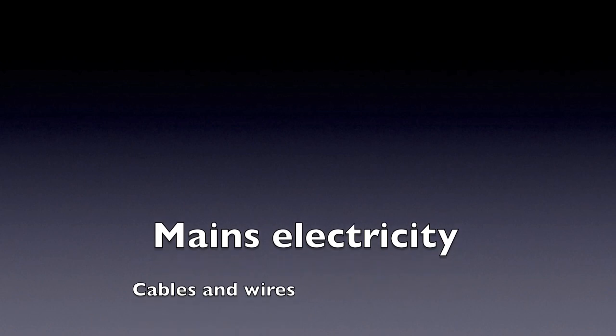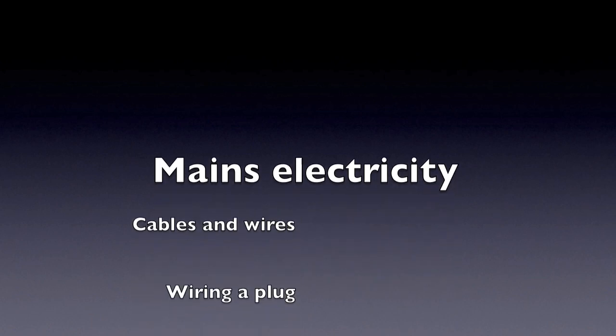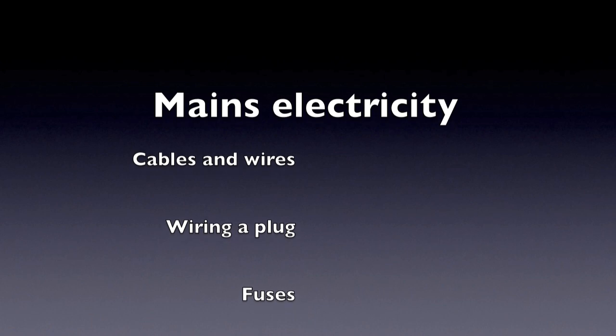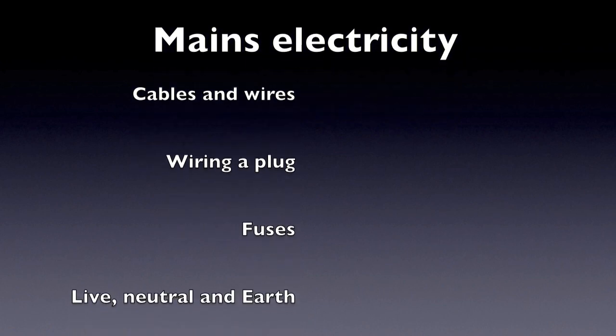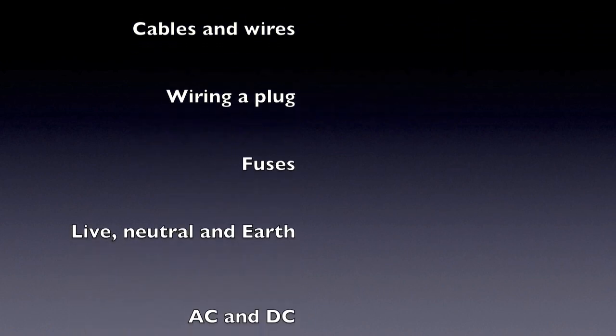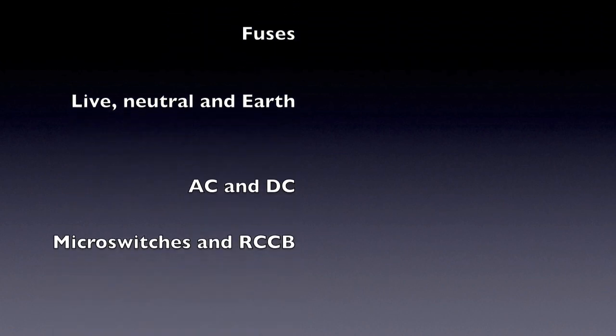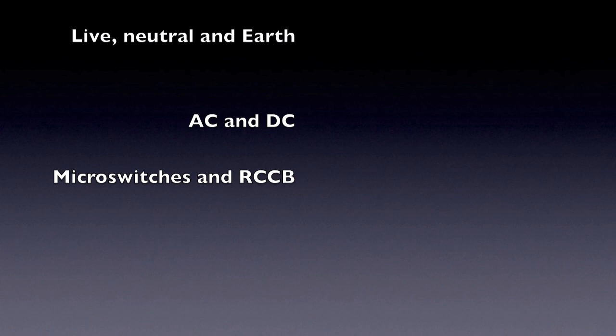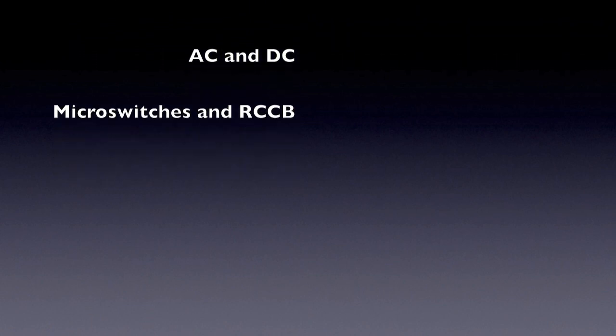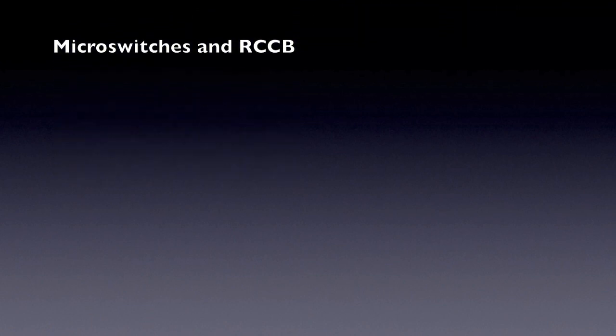This video tutorial on mains electricity starts with the structure of wires and cables, then explains how a plug is wired and why it's wired that way. The way fuses work and their function is explained, why there are three wires - live, neutral, and earth - and what they do, the difference between AC and DC, and finally other safety devices.